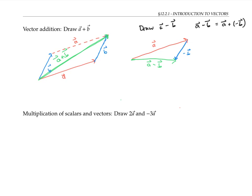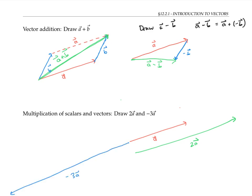It's also possible to multiply scalars and vectors. If we start with vector a, then the vector 2a goes in the same direction but is twice as long. The vector negative 3a goes in the opposite direction because of the negative, and it's three times as long. The vectors drawn are only rough approximations — to get a more accurate representation, you'd need to use a ruler or put vectors on a coordinate grid.